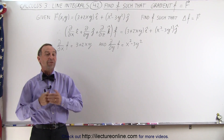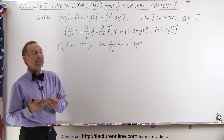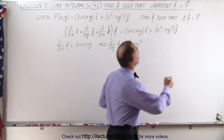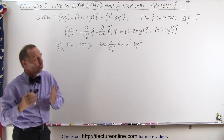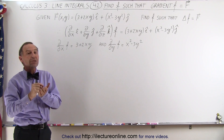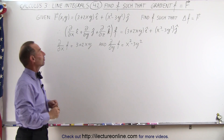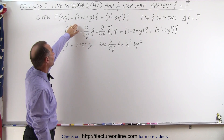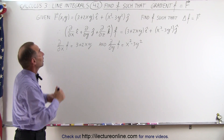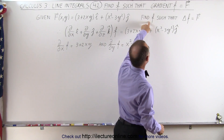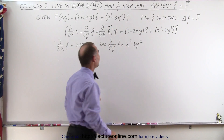Welcome to our lecture online. We've learned in the past few videos that if a vector field is conservative, then there must be a function f such that the gradient of that function equals the vector field. We have a vector field which we showed in the previous video was indeed conservative, which means there must be some function f such that we take the gradient of that function and get back this vector field.